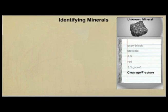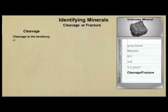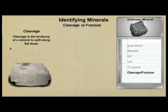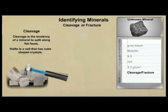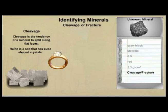Minerals can break apart by either cleavage or fracture. Cleavage is the tendency of a mineral to split along flat faces. For example, when you strike a piece of halite — which is a salt that has cube-shaped crystals — it tends to break into smaller cubes. Jewelers take advantage of cleavage when they have to shape diamonds and other stones used in jewelry.